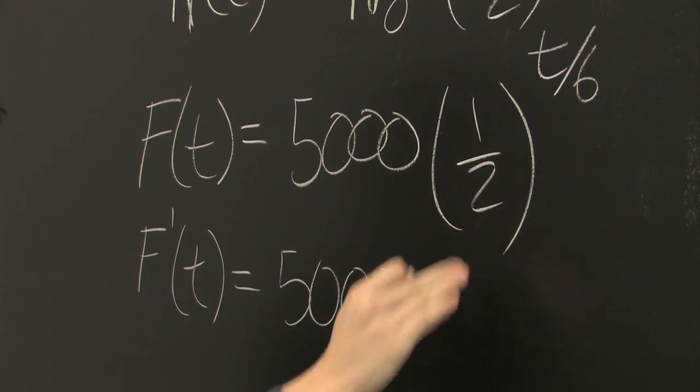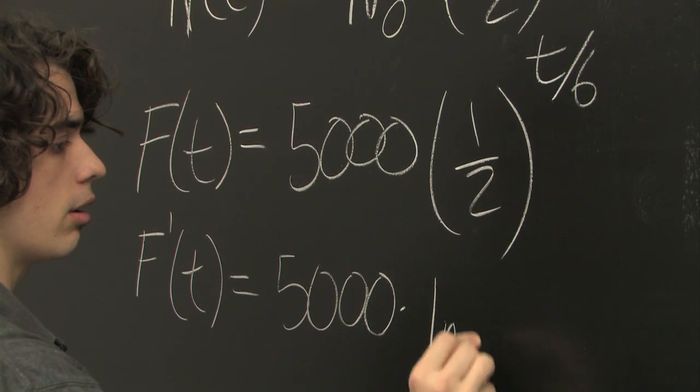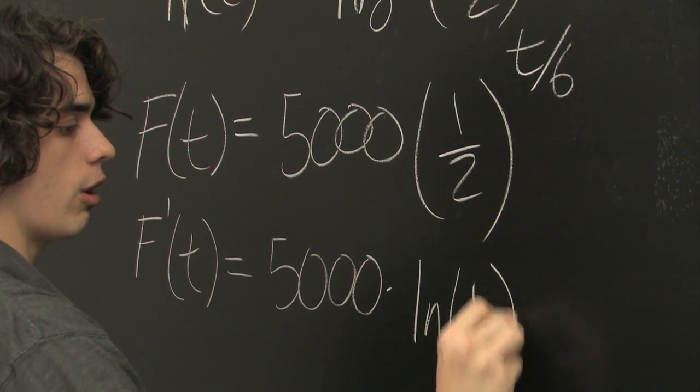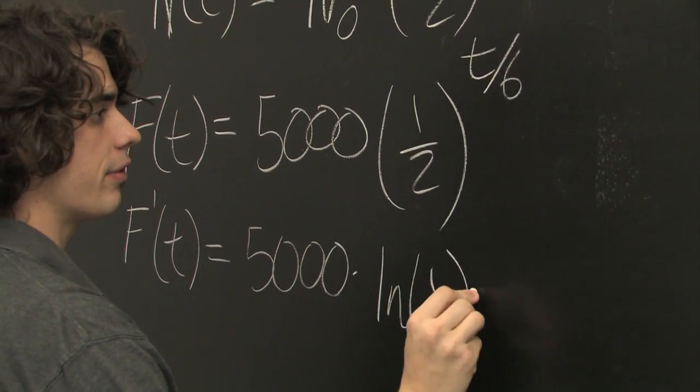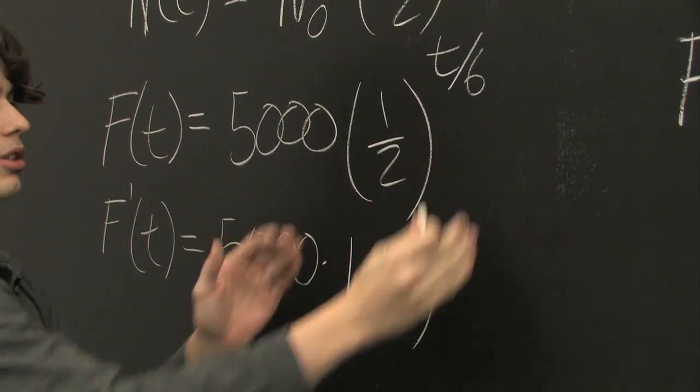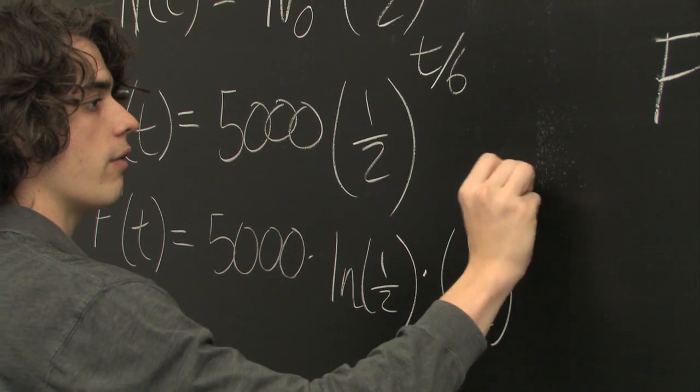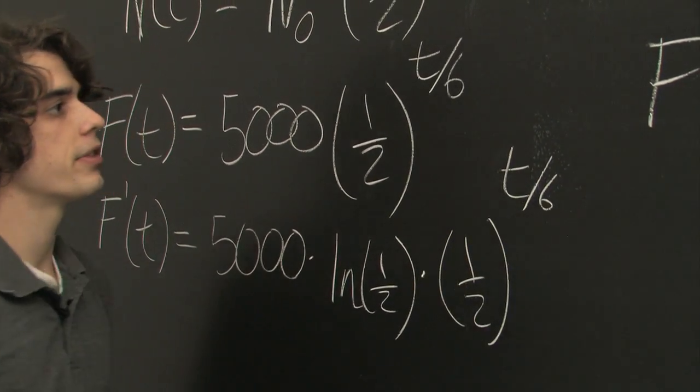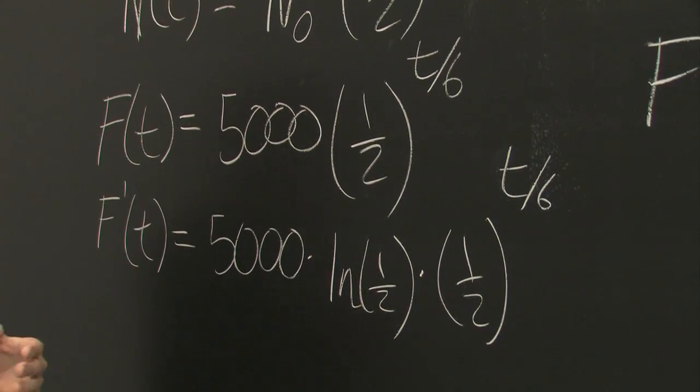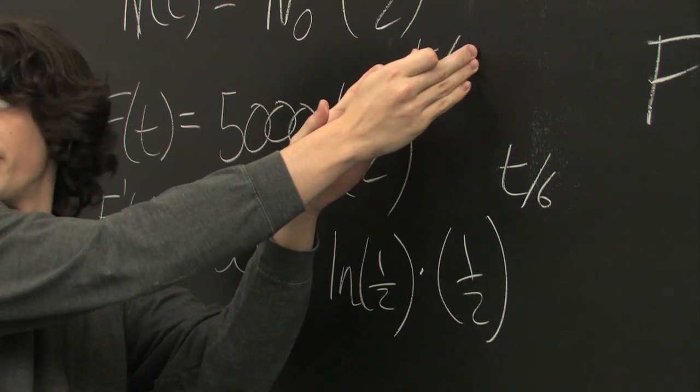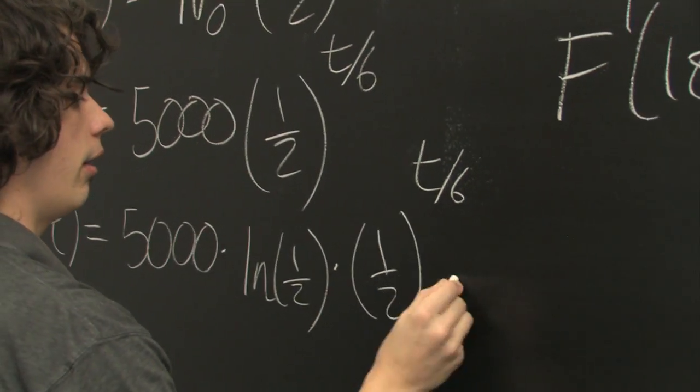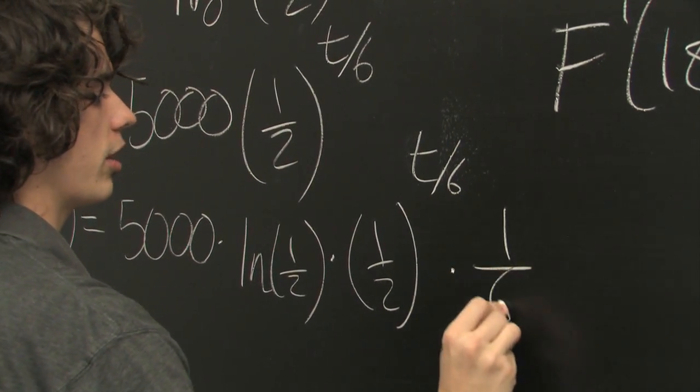And so here we have an exponential function. What we want to do is take the natural logarithm of the base, natural log of one-half times this, times one-half to t over 6. And since we're employing the chain rule, we want to take the derivative of this function here, which of course is just 1 over 6.